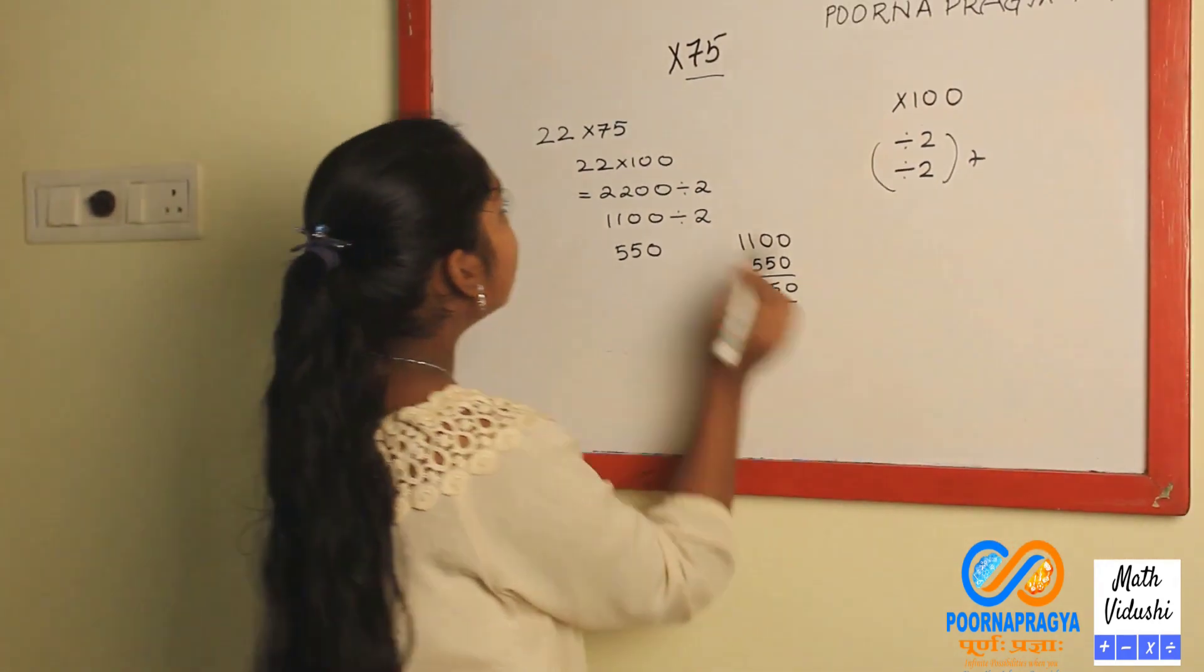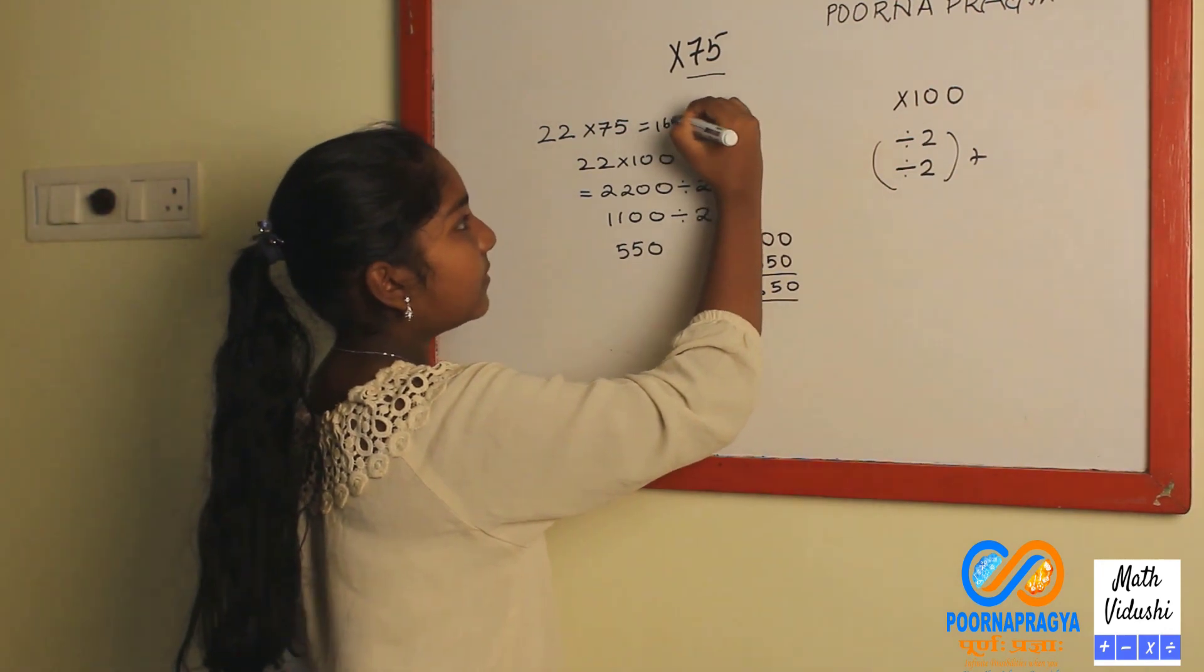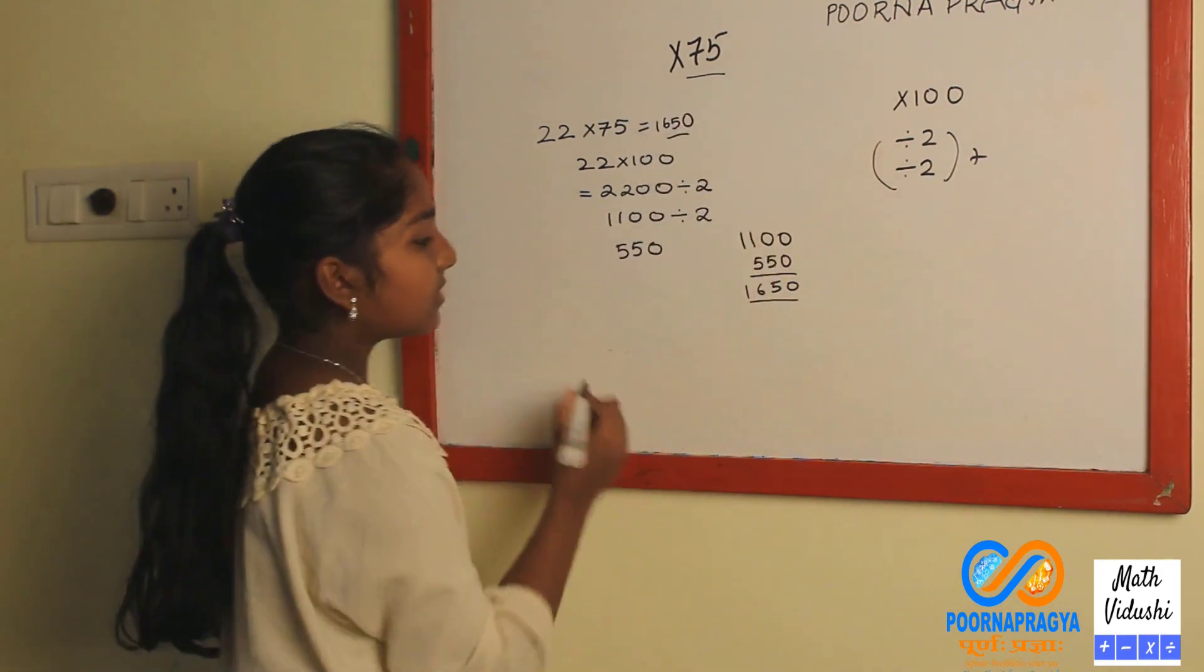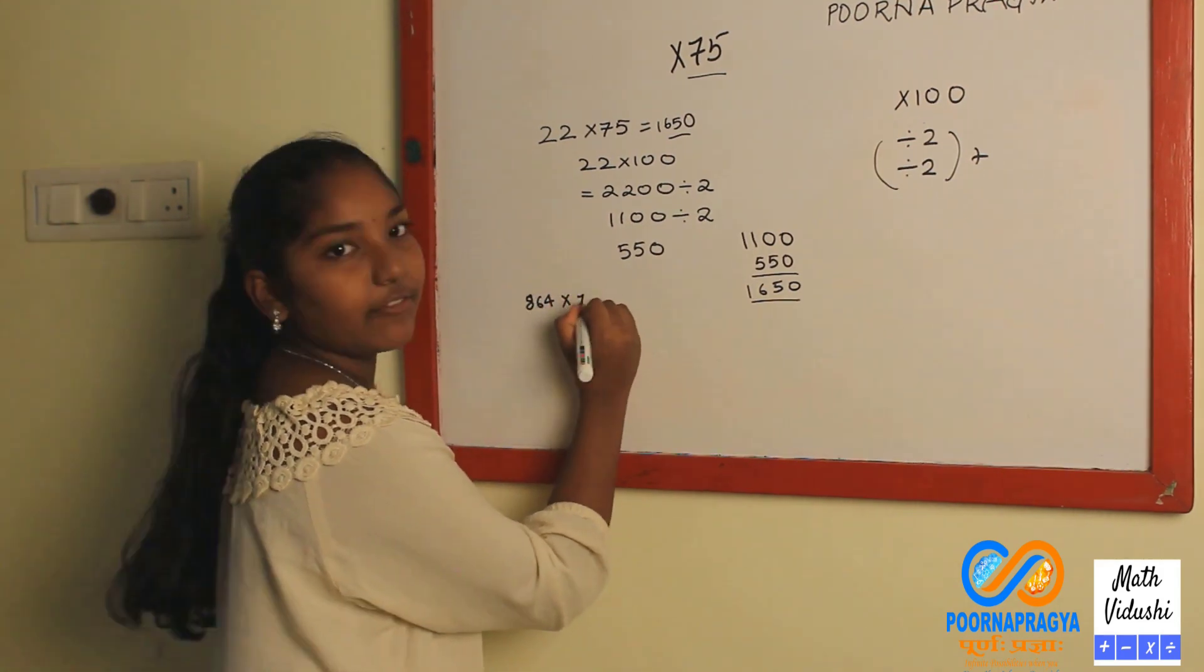And your answer for 22 into 75 is 1650. Let's take another example of 864 into 75.